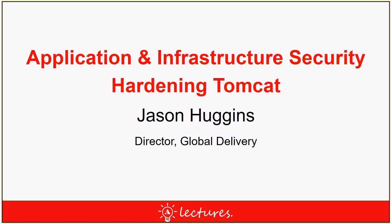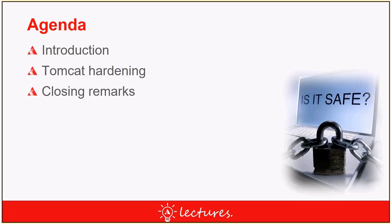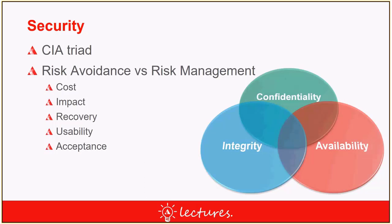The basic agenda: start with a small introduction about why we're here and why we're talking about security, then go into the specifics of Tomcat hardening, and finally look at other considerations. Why are we here? Well, security is all about confidentiality, integrity, and availability of your data. The CIA triad is just one of the models out there, but at the basic level it covers most of what we need to think about.